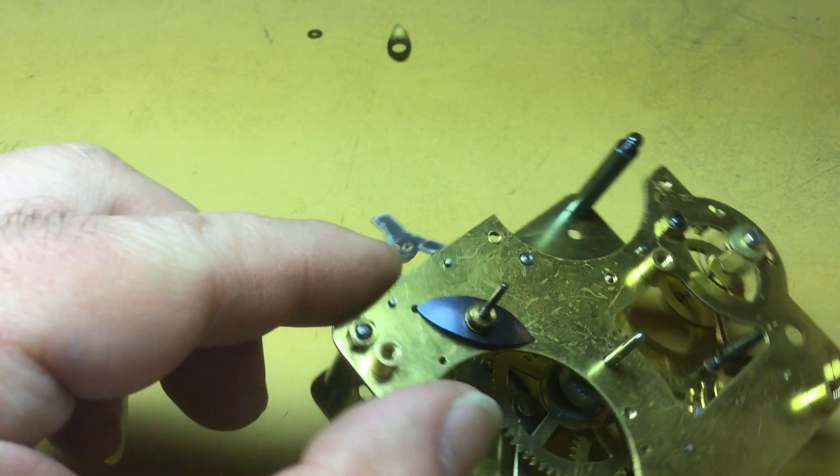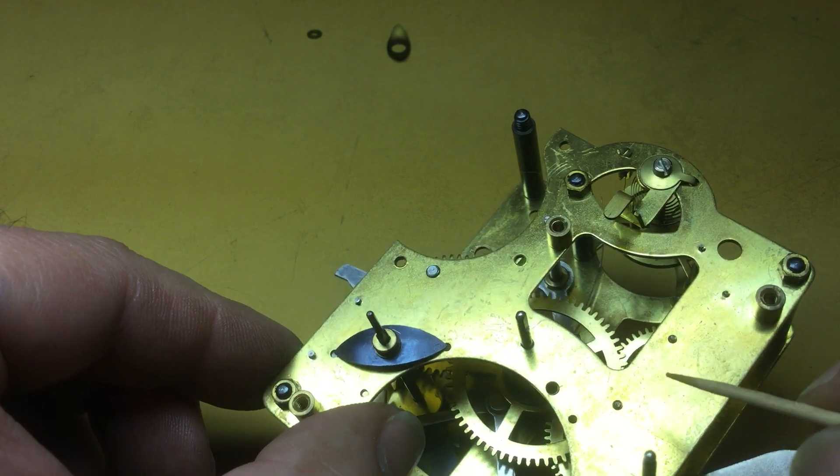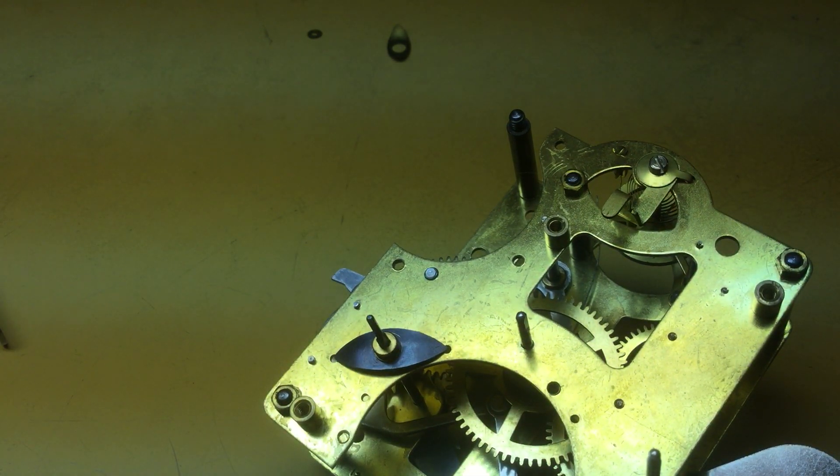Okay, and it's very hard to see, but these pivots on the time side have little oil sinks in them. They're very, very tiny.